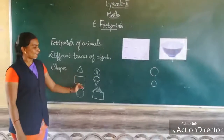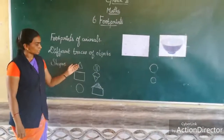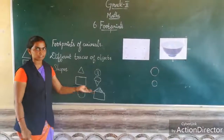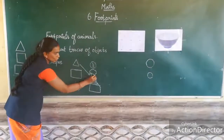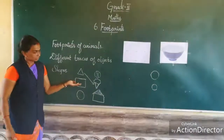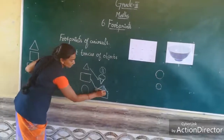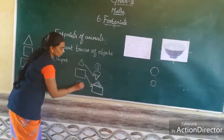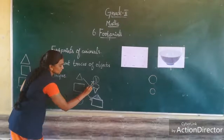Now we are going to match which figure is similar to these shapes. The first shape is triangle — this one is also a triangle. Next, rectangle — the rectangle is tall. Next, a ball is a circle.